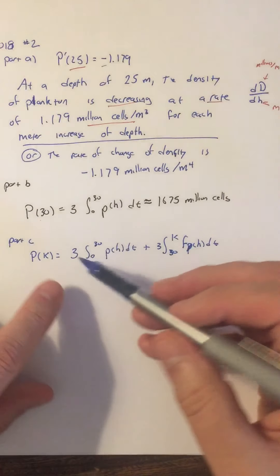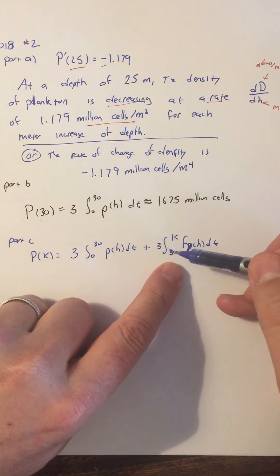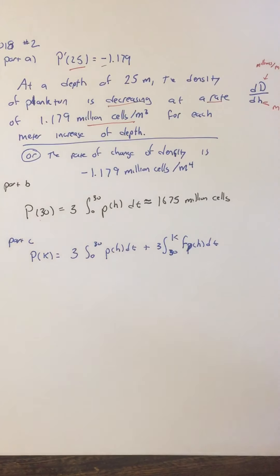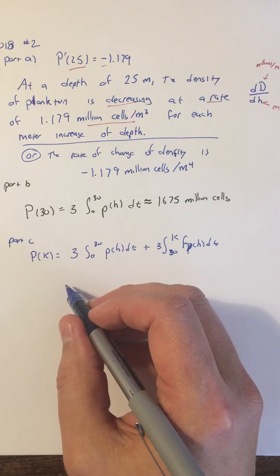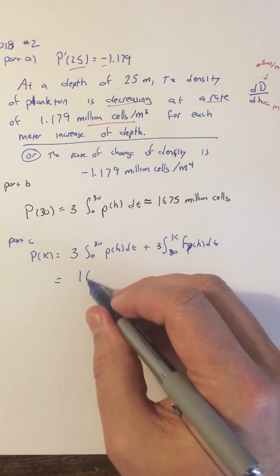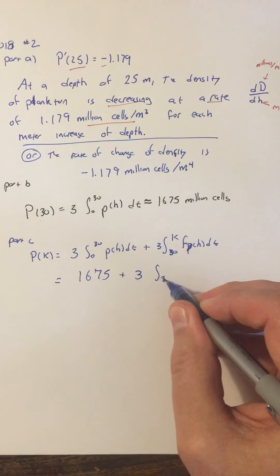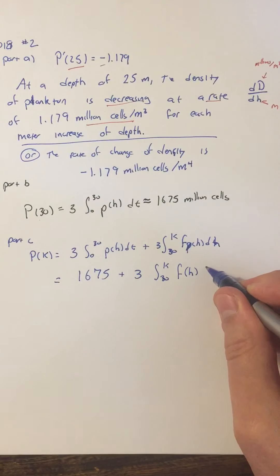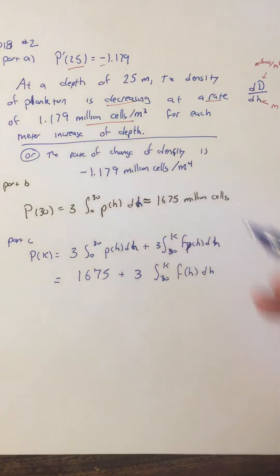The number of plankton at depth k equals the number at depth 30 plus however many there are from 30 to k. Since we don't know f of h, we just leave the second integral as written. Optionally, we can substitute 1675 for the known first integral, giving: 1675 plus 3 times the integral from 30 to k of f of h dh. Both integrals should use dh since the variable of integration is h.